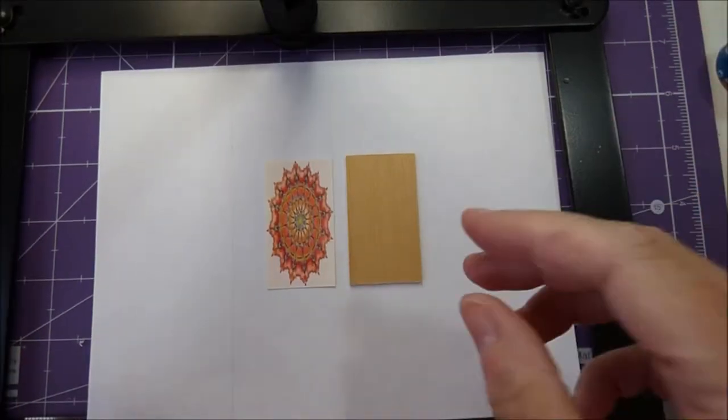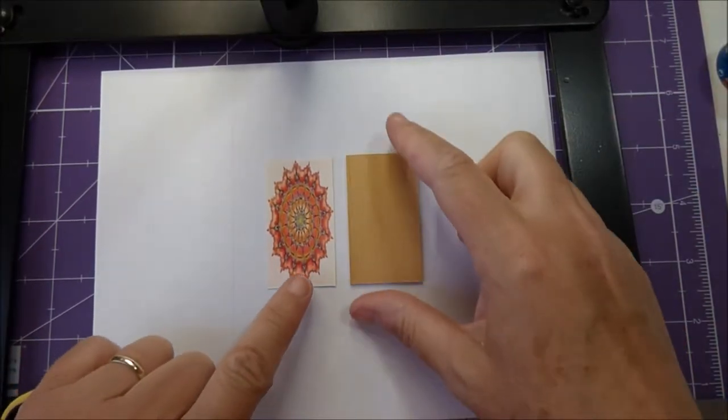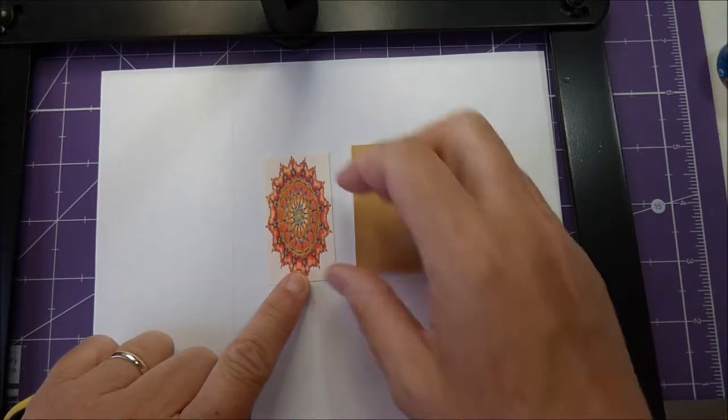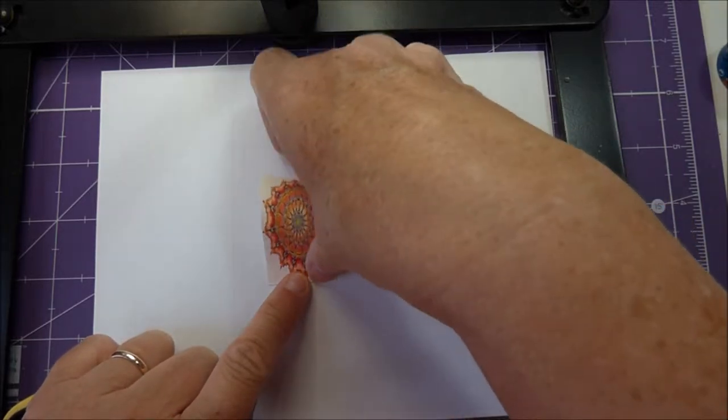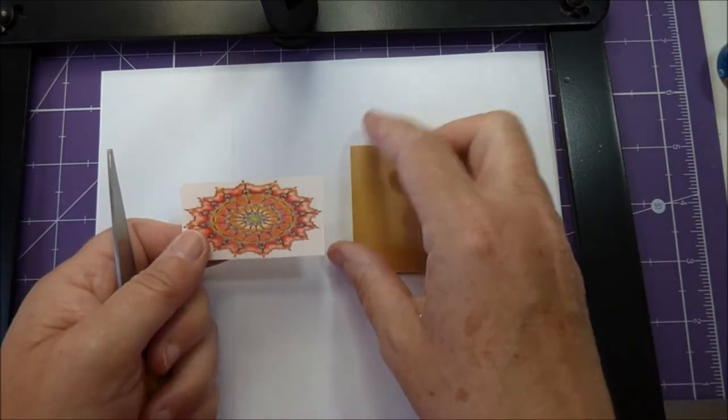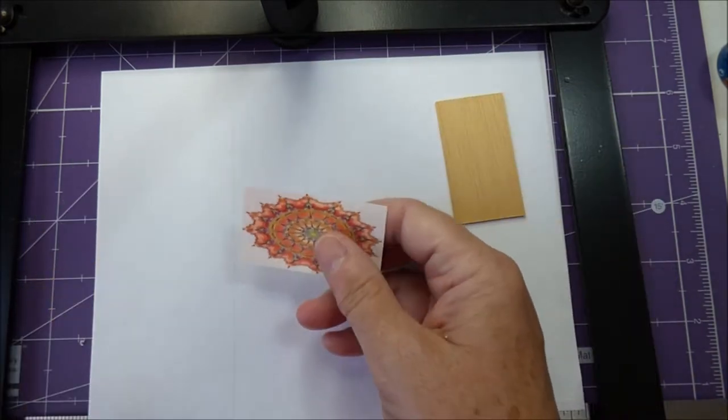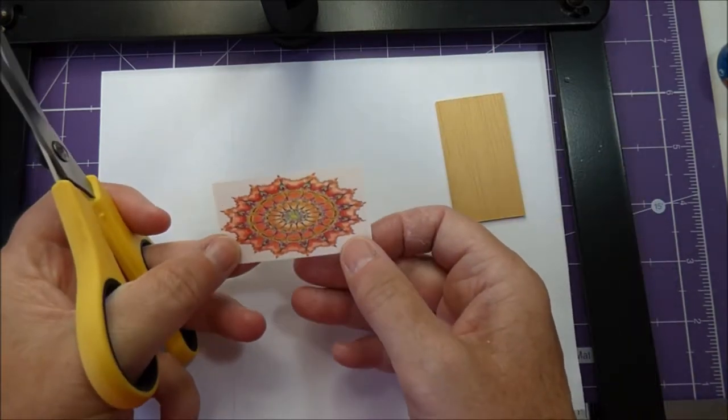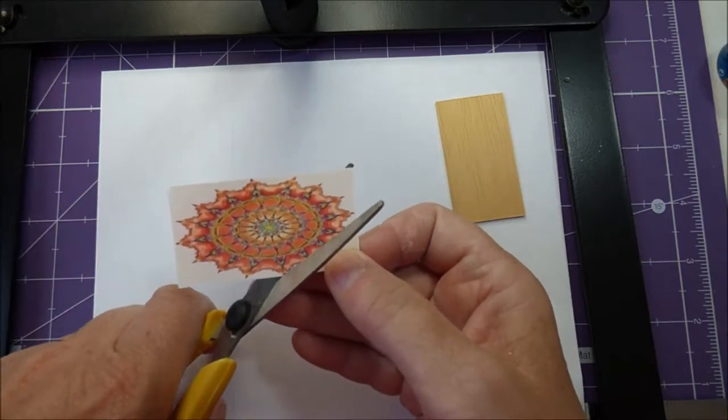Now we're going to prepare the platform base. You will need the decal and the wooden strip. First of all, you're going to carefully cut out the decal using some small sharp scissors.